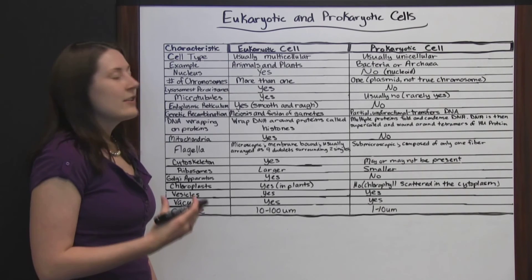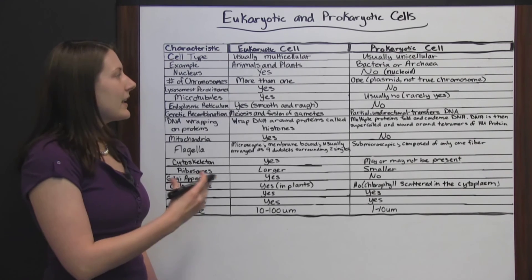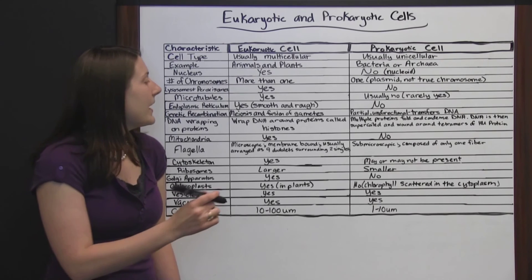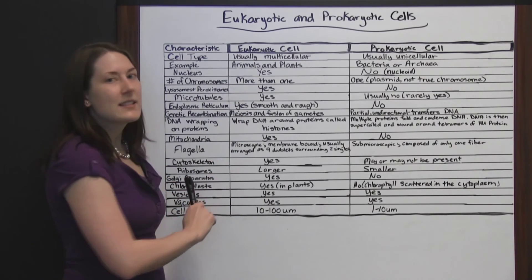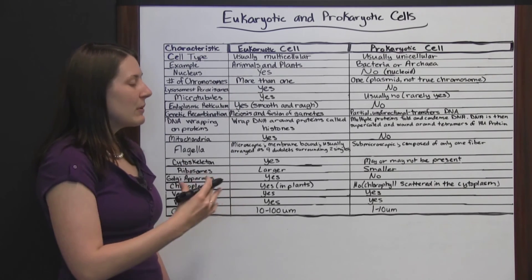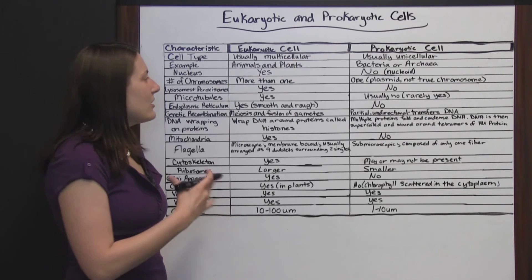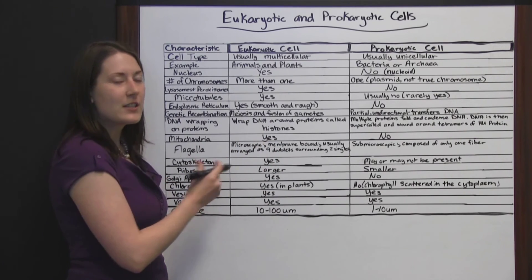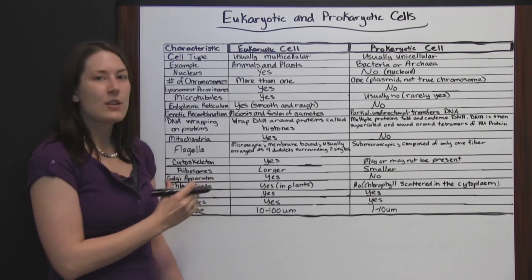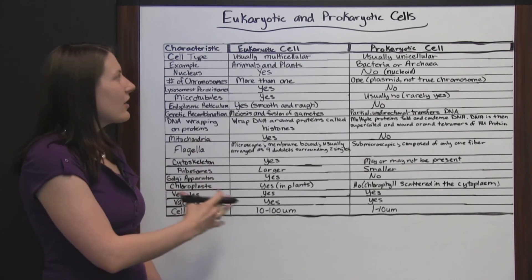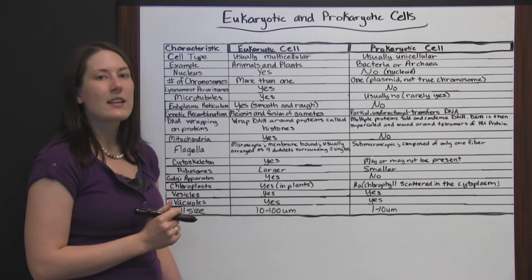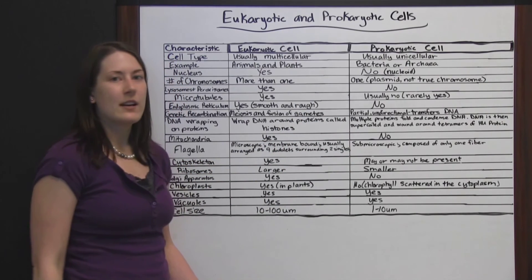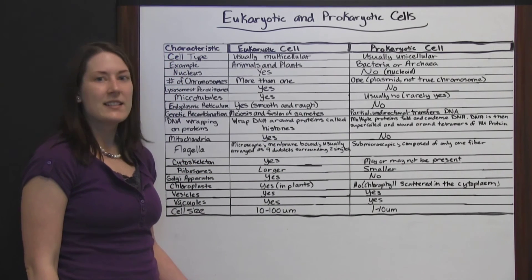There's a lot of information here and there's a lot to remember about prokaryotic and eukaryotic cells, but as you learn about each one of these things individually, it will be easier to remember which one goes with which. You can always refer back to this chart to keep track of what is in a eukaryotic cell, what characteristics the eukaryotic cell has, and what all is inside of a prokaryotic cell and what characteristics it has.